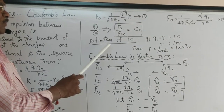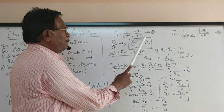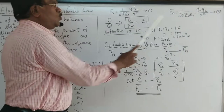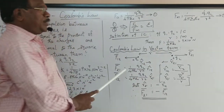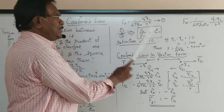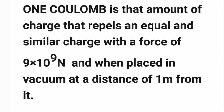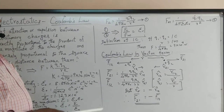Now let us define one coulomb of charge. In Coulomb's formula, suppose q1 and q2 both have the same magnitude of one coulomb each and are one meter apart (r = 1 m). Substituting these values, F = 9 × 10⁹ newtons. So one coulomb is defined as the amount of charge that repels an equal and similar charge with a force of 9 × 10⁹ newtons when placed at a distance of one meter.